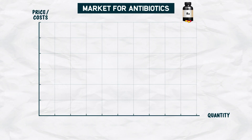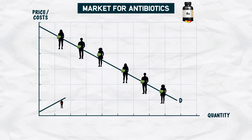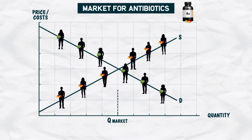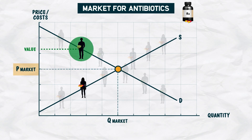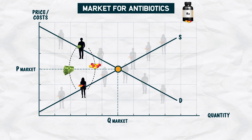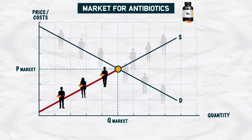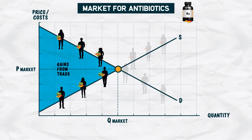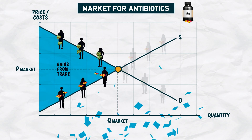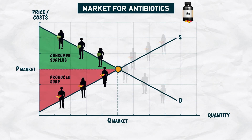In the market for antibiotics, we have buyers represented by the demand curve and sellers represented by the supply curve. A trade happens when the buyer values the good more than the market price, and the seller values the market price more than the good. The buyer and the seller transact, and both benefit. All the buyers on this part of the demand curve value the antibiotics more than the price and they buy them. All the sellers on this part of the supply curve can produce antibiotics for profit and sell them. When we say a market maximizes the gains from trade, we're referring to every trade being mutually beneficial. Consumer and producer surplus are maximized. This is why economists like markets.